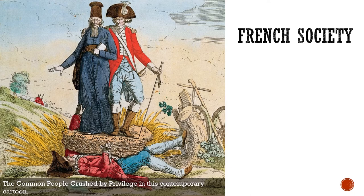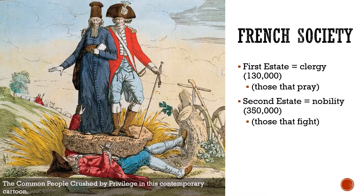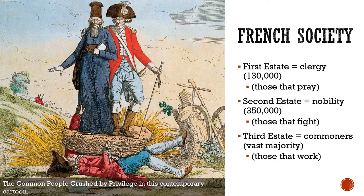The first estate was the clergy, approximately 130,000 people. The second estate was the nobility, roughly 350,000 people. The third estate was the vast majority, the commoners. By the time of the French Revolution, the third estate was far more complicated — it also included very wealthy merchant class people, some wealthier than the nobility. Legally, the first two estates had privileges that the third estate didn't have, and this is what created an unfair tipping point in French society.